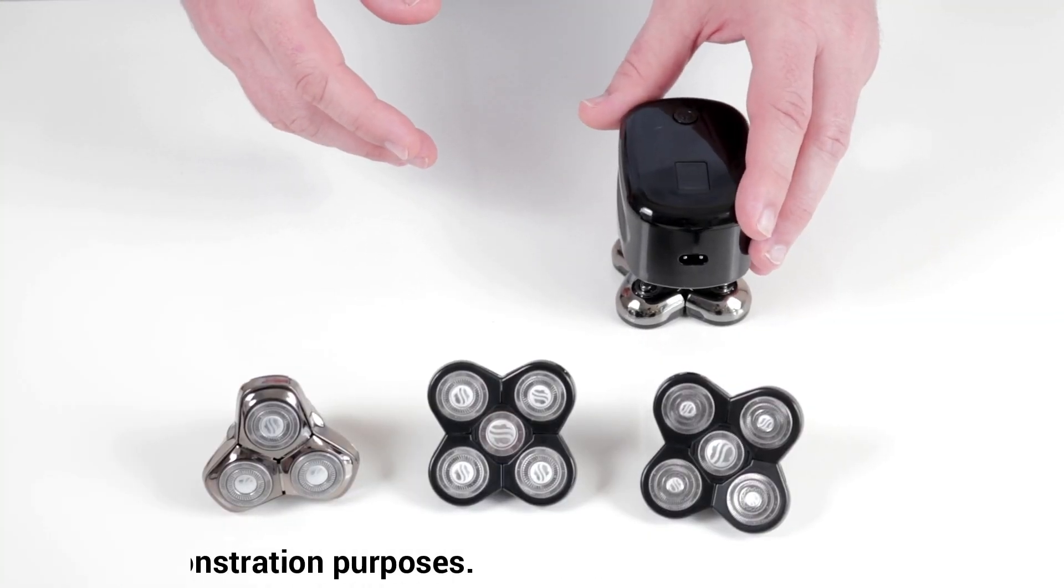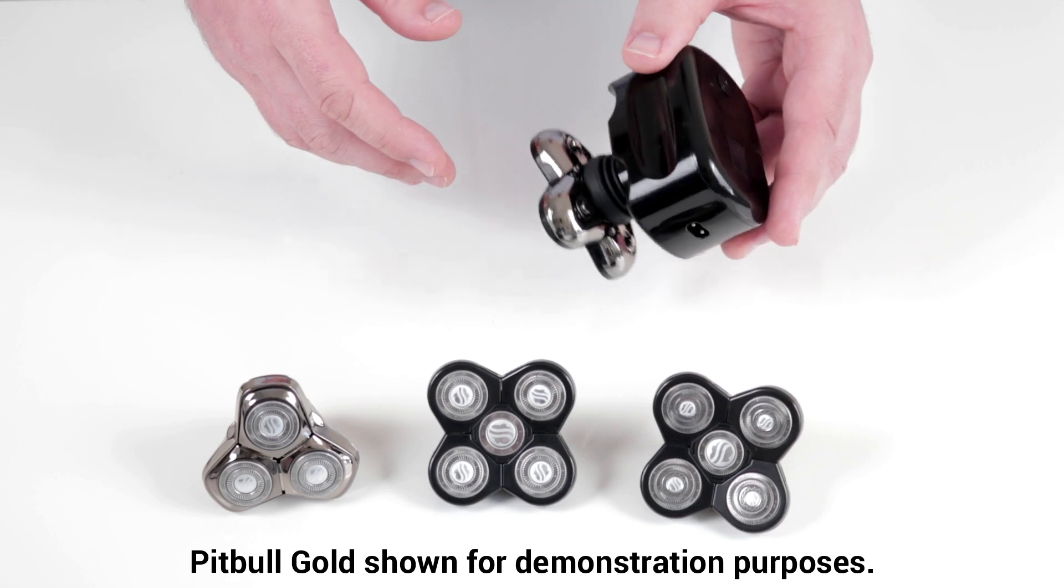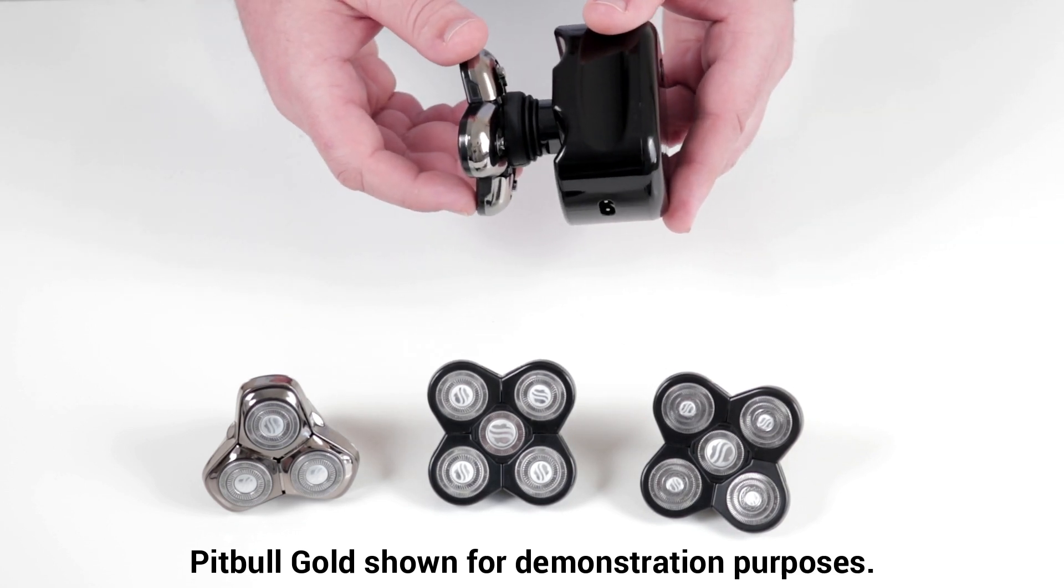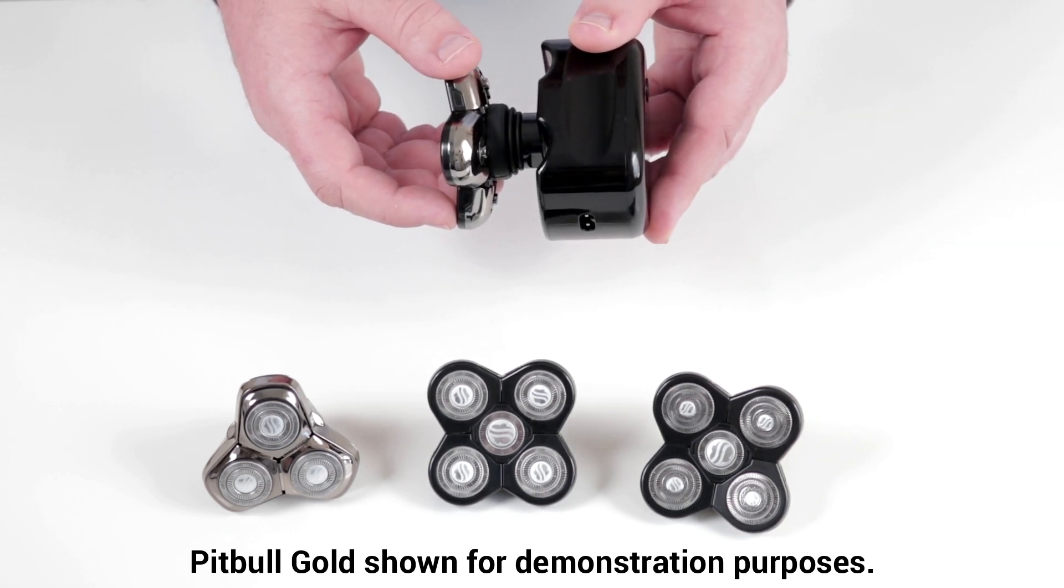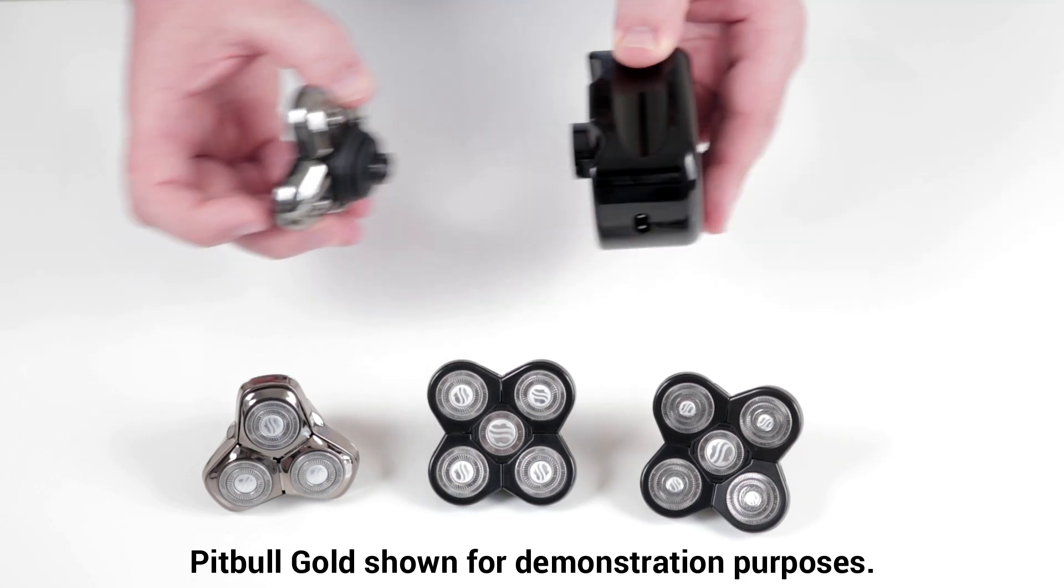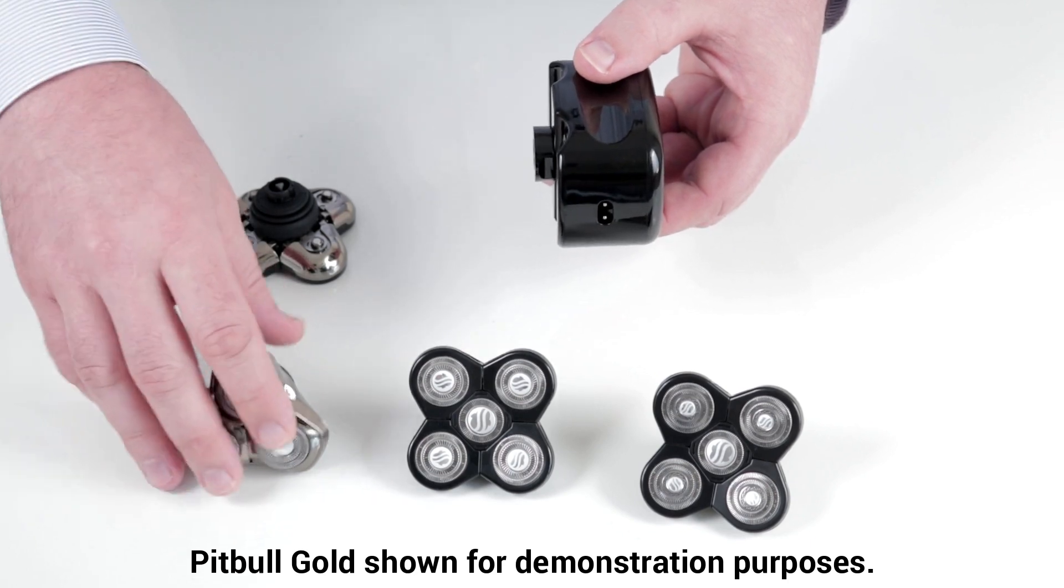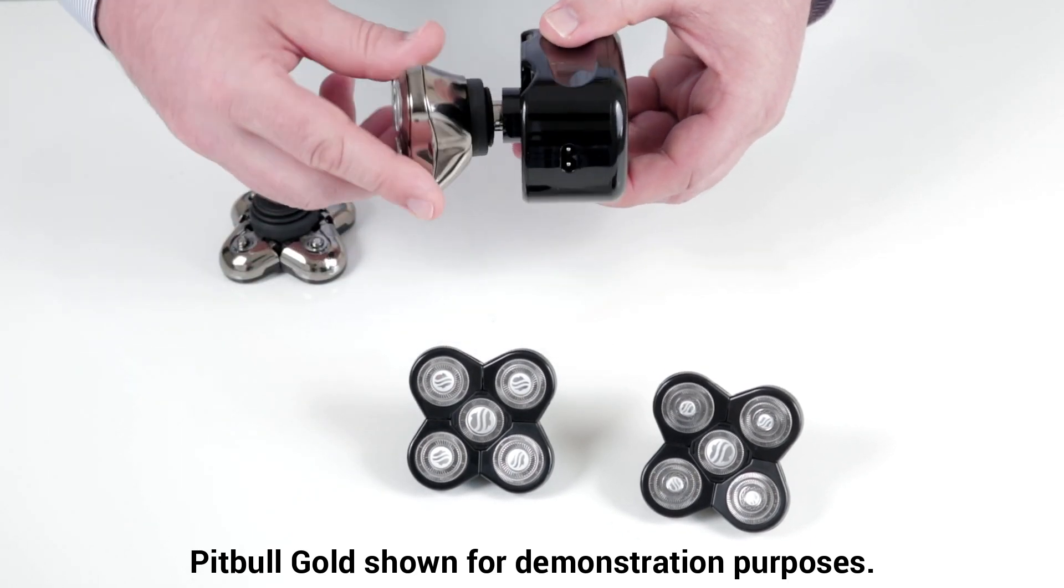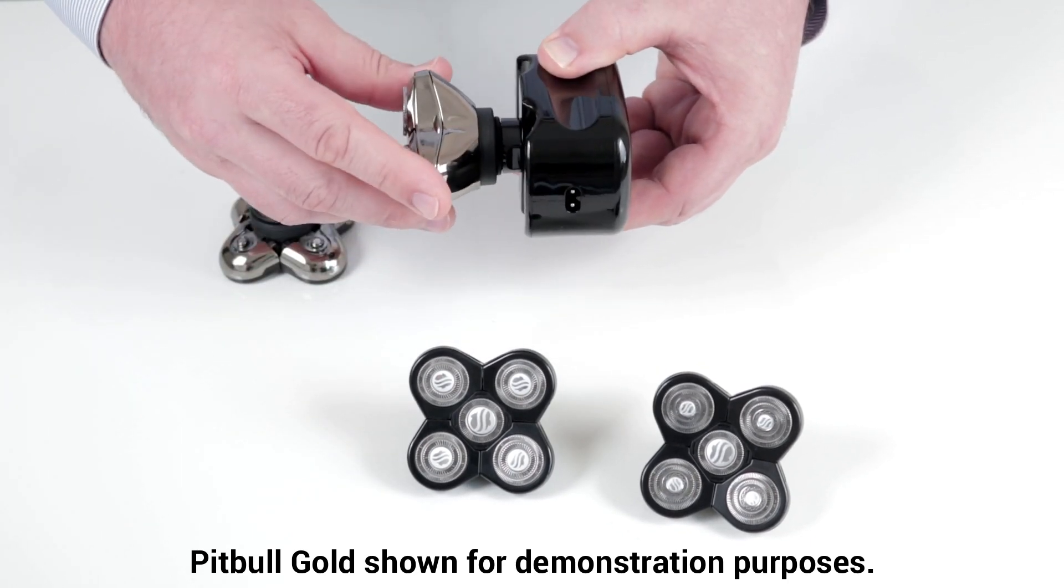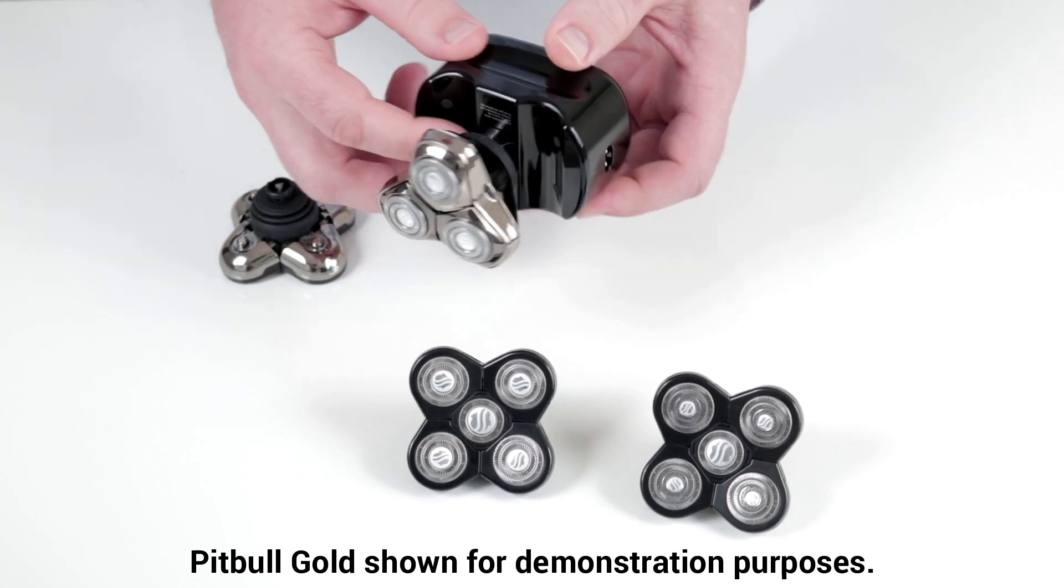The Pitbull and Palm Shavers have blades that are easily replaceable. Simply hold the blade, turn it one-quarter turn counterclockwise, and pull away from the main unit to separate. To replace the blade, simply insert the blade and turn one-quarter turn clockwise to lock it into place.